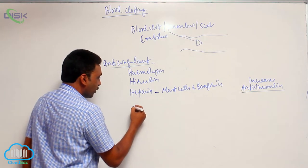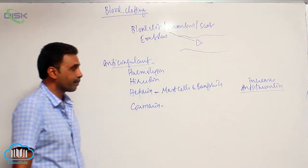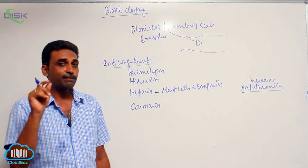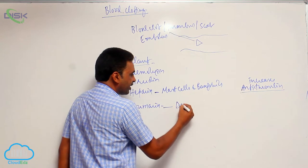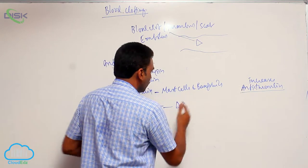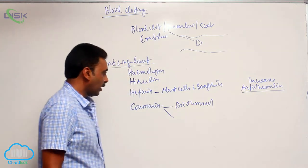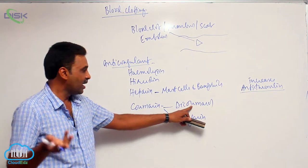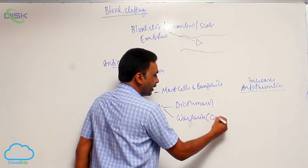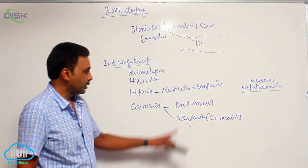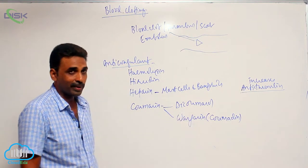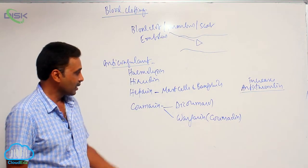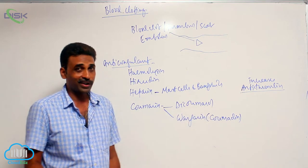We also have coumarin, which is of plant origin. From coumarin we get dicoumarol and warfarin. Initially dicoumarol was synthesized and later warfarin was synthesized; the brand name of warfarin is coumarin. Coumarin by itself does not have any anticoagulant property, but dicoumarol and warfarin are anticoagulants.